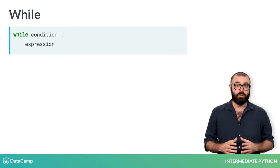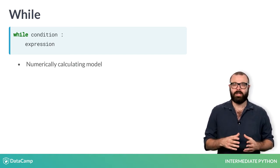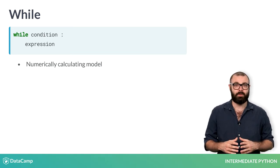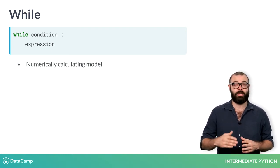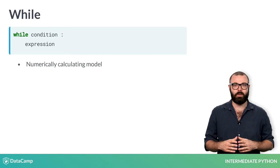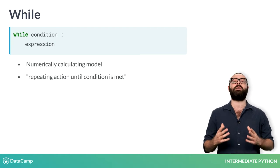As an example, suppose you're numerically calculating a model based on your data. This typically involves taking the same steps over and over again until your error between your model and your data is below some threshold. When you can reformulate the problem as repeating an action until a particular condition is met, a while loop is often the way to go.